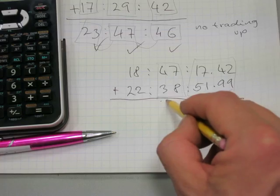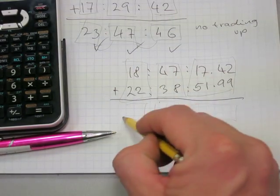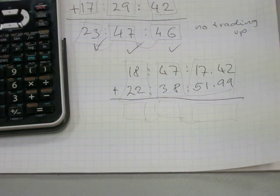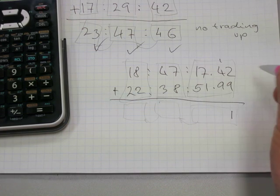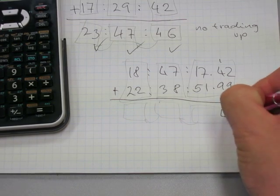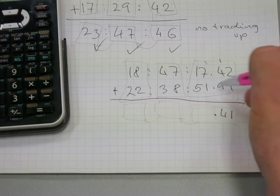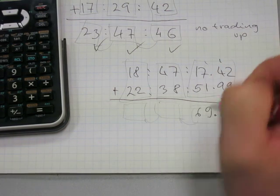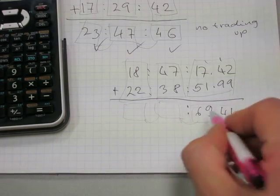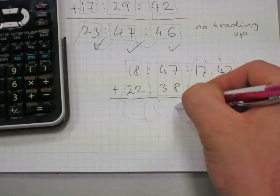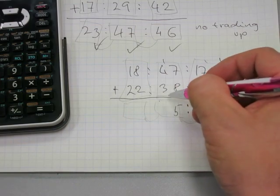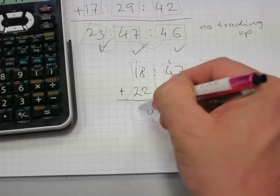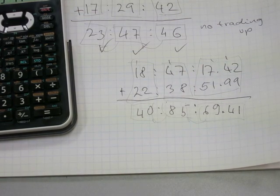Add the minutes total in the minutes column, then the hours in the hours column. If there's any trading to be done, I'll show you. 9 plus 2 is 11, carry the 1; 9 plus 1 is 10, so that's ...14 in the tenths. The decimal dot stays. 7 plus 1 plus 1 is 9; 5 plus 1 is 6 — we have 69 seconds, which is too many. We'll need to trade. 7 plus 8 is 15, carry 1; 4 plus 3 plus 1 is 8; 8 plus 2 is 10, carry 1. That gives 40 hours, 85 minutes, 69.41 seconds.